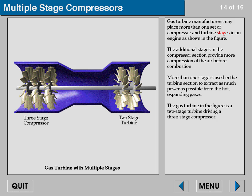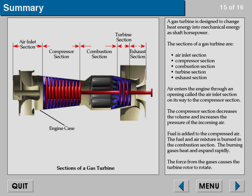A gas turbine is designed to change heat energy into mechanical energy as shaft horsepower. The sections of a gas turbine are: air inlet section, compressor section, combustion section, turbine section, and exhaust section. Air enters the engine through the air inlet section on its way to the compressor section. The compressor section decreases the volume and increases the pressure of the incoming air.